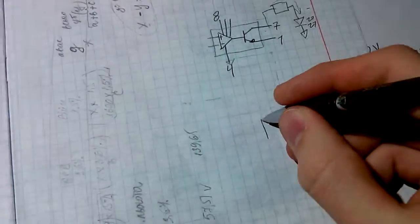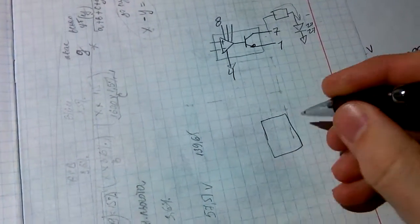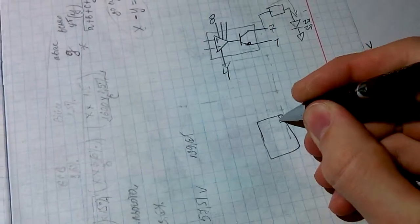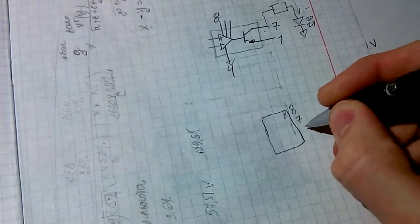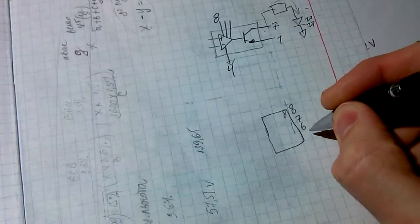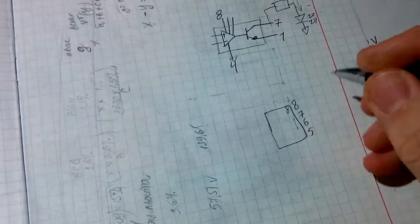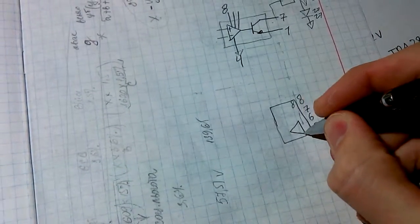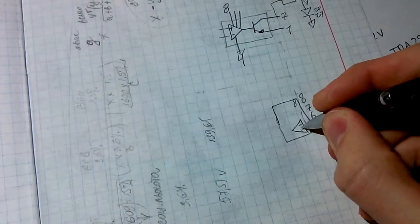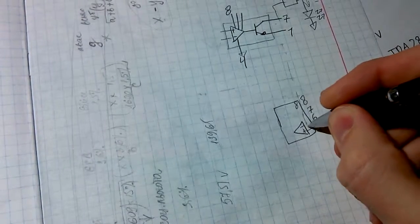Here you can see the package. Pin 8 being supply, excuse me, 7 being the output, 6 being the inverting input, 5 being the non-inverting input. The op-amp inside looks like this.